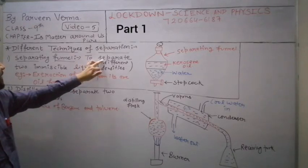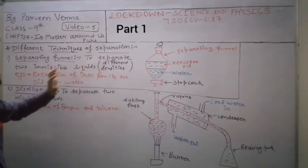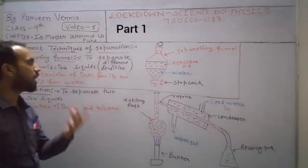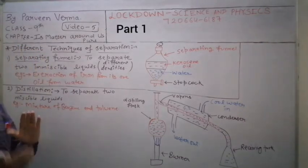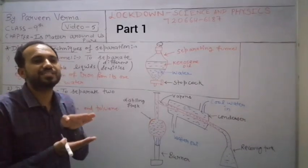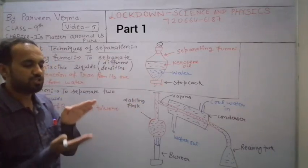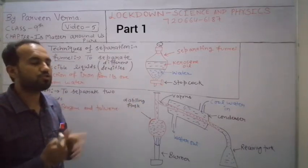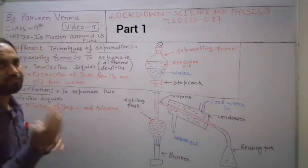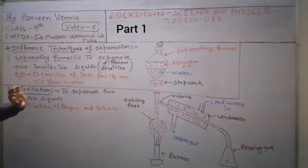Immiscible liquids means two liquids whose densities are different - one has higher density and one has lower density. When such liquids are mixed together, we use a separating funnel to separate them.